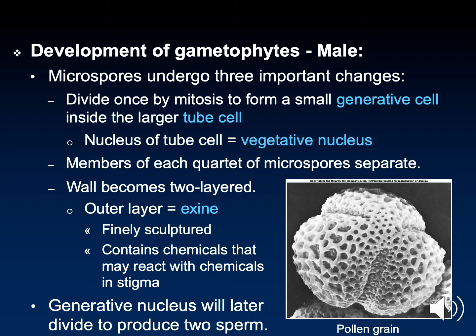Instead of producing two identical daughter cells, a cell is developed on the inside of another. What you have is a large cell referred to as a tube cell, with its own nucleus, and inside of that a smaller cell called the generative cell, which itself also has a nucleus. On the outside of the tube cell, there will be changes to the outer layers — an exine forms, which is specific to the species. The exine is the outer layer; it is finely sculpted and contains chemicals which will react to the stigma after pollination occurs. The purpose of the tube cell is to form the pollen tube, a long channel to transfer sperm from the top of the stigma to the ovule.